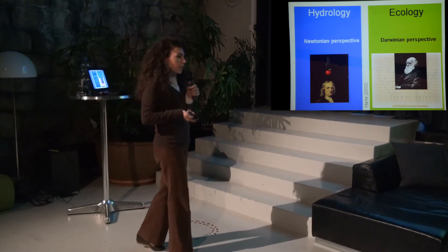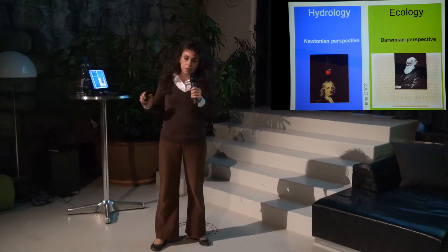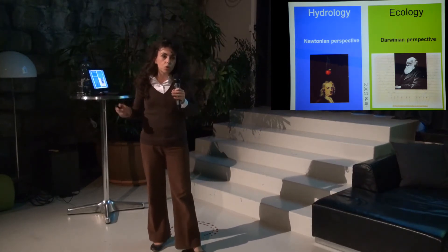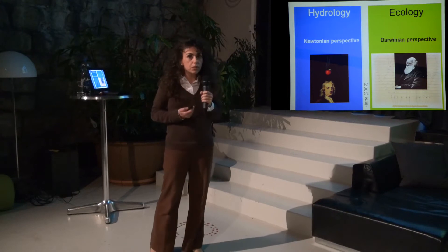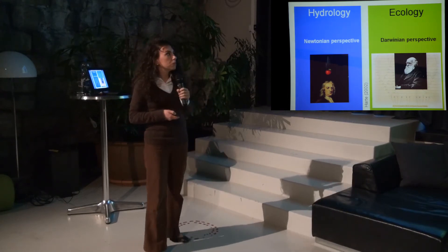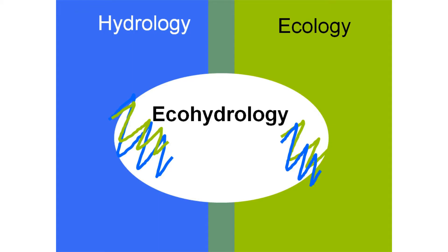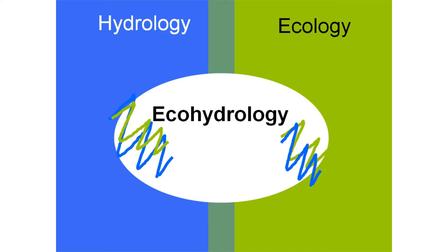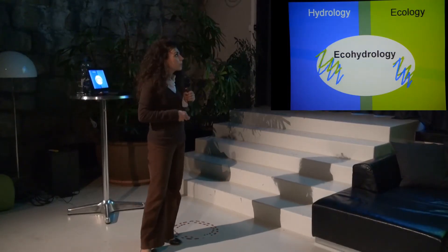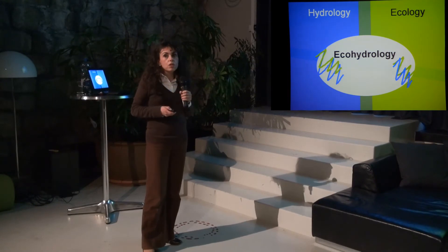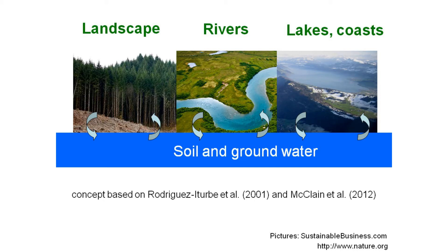So ecohydrology was born from this mix of two sciences and focuses on the interactions between water and ecosystems — in other words, between environmental change and water resource management. The key stock in ecohydrology is the soil moisture, and there we have three spheres: landscape, rivers, and lakes and coasts.